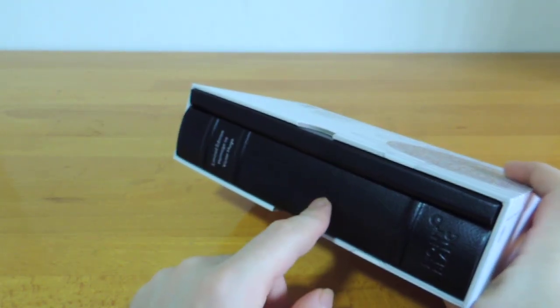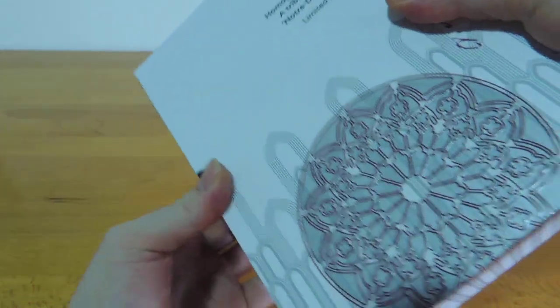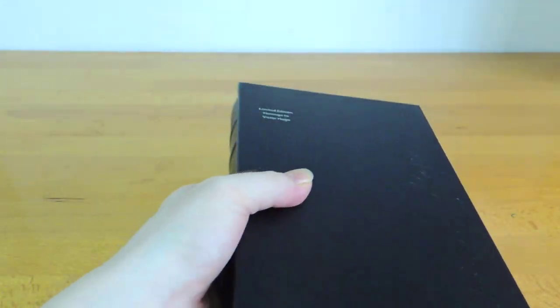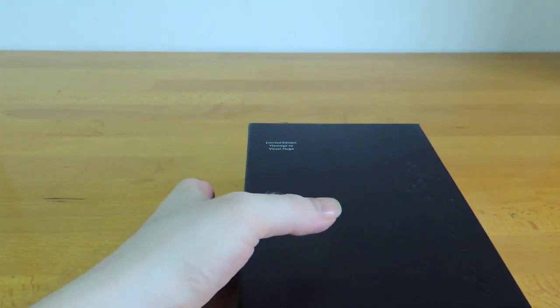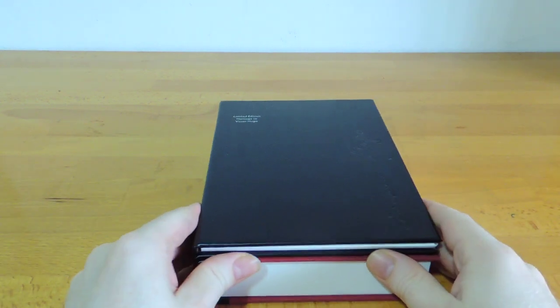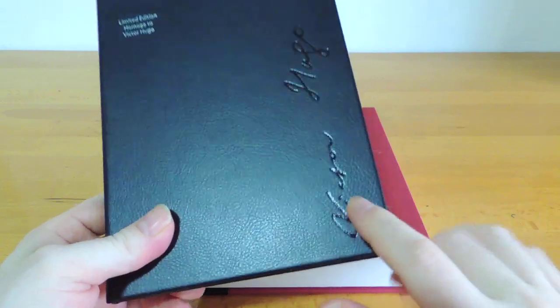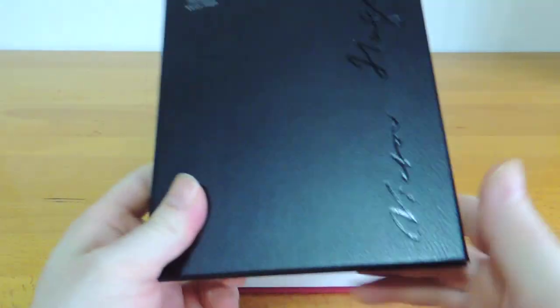These limited editions come with also a supplementary book that has usually an excerpt, a facsimile or a copy of an excerpt of a document important to the literary figure. So Victor Hugo embossed on the supplementary book and the actual pen case. Let's put that aside for a minute. Already we've lost focus.